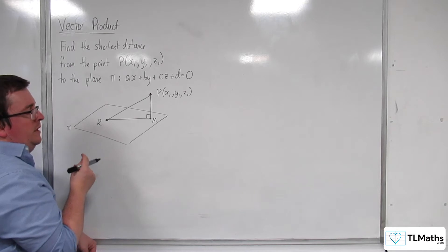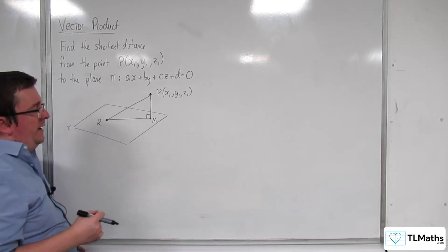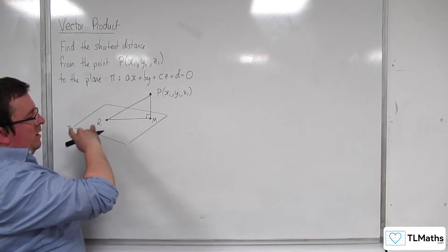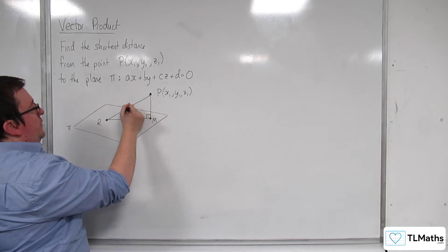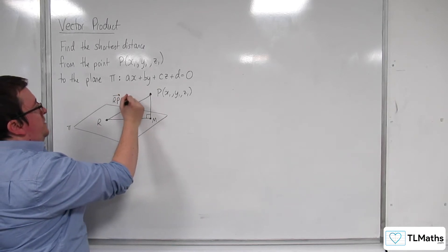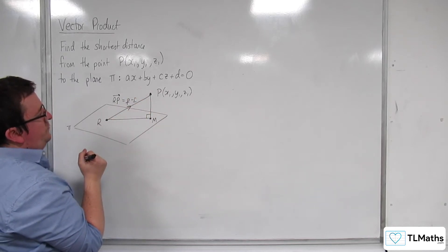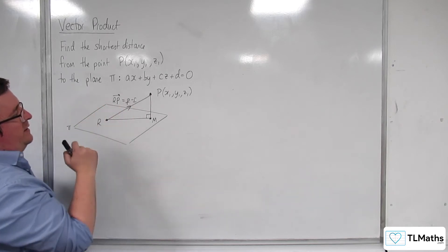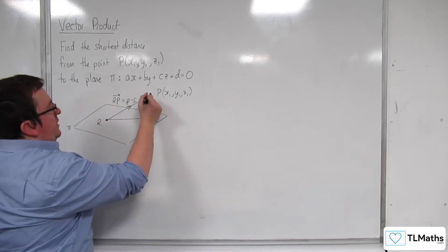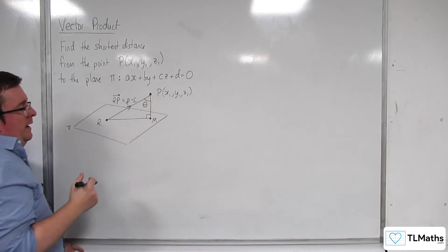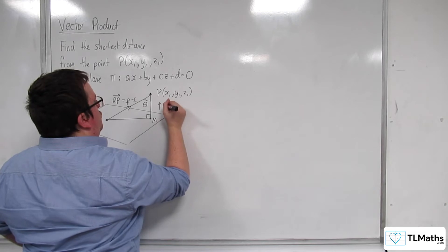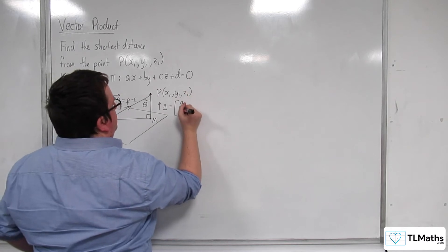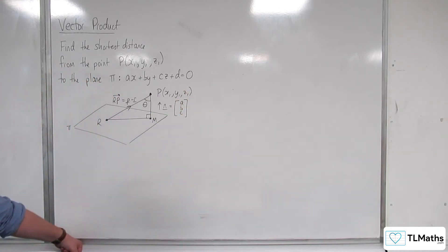So what we're going to do is say that the vector R to P, that vector there, is going to be P minus R, where lowercase p is the position vector of P and lowercase r is the position vector of R. And it's going to make this angle theta. And of course, this is in the direction of the normal vector N, which will be the vector A, B, C.